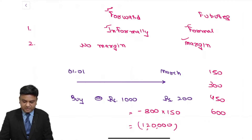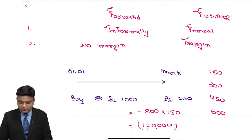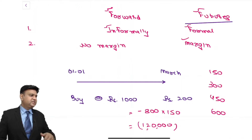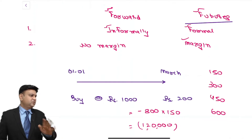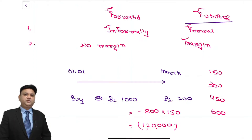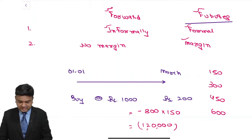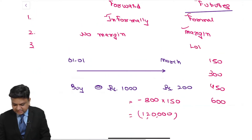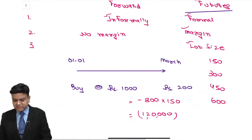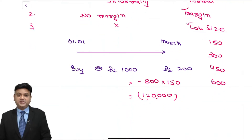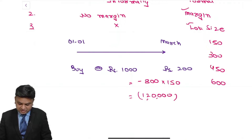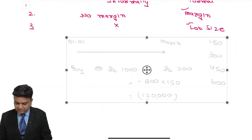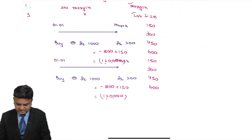In a futures contract there are two parties: one is the buyer of the underlying asset, another is the seller. The buyer will have a contract to buy, the seller a contract to sell — the transaction is exactly the same as in a forward contract. The third point is lot size. The lot size concept exists in futures transactions but not in forward transactions. In a forward transaction, the transaction may be entered upon for one security, five securities, 500 securities — any number.